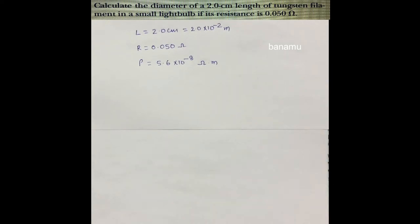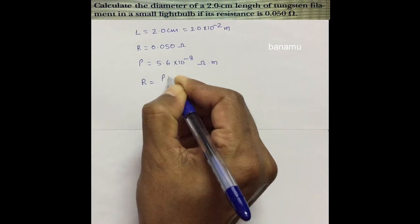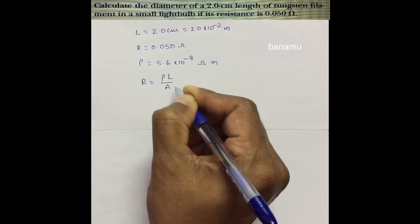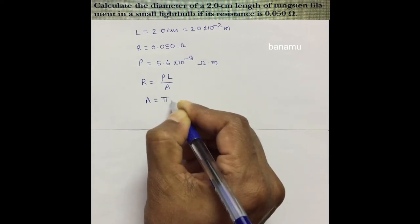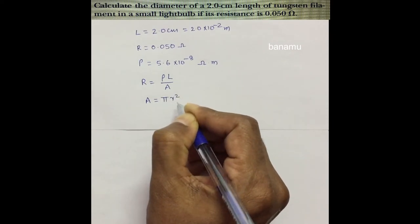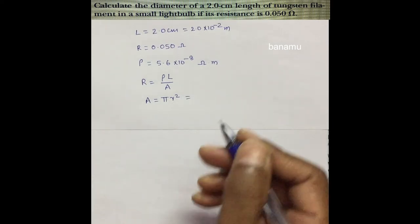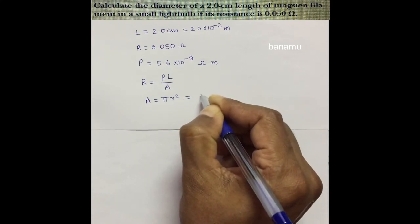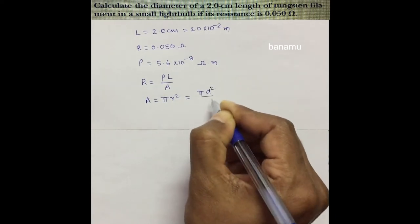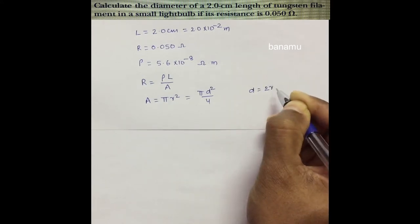We can calculate the diameter of the tungsten filament. The resistance R is equal to rho L by A, where A is the area of the filament. A is equal to pi r squared, where r is the radius of the filament, and r is equal to d by 2, or d is equal to 2r. Therefore the area A equals pi d squared by 4.